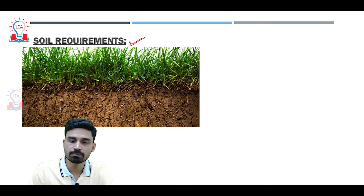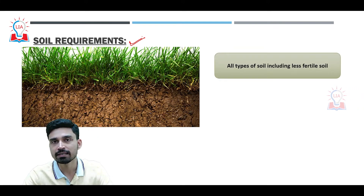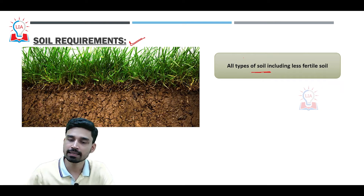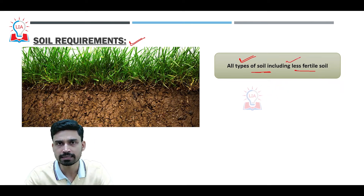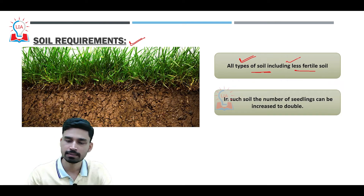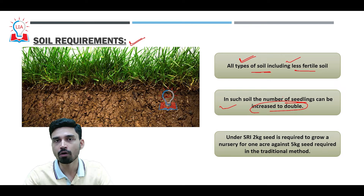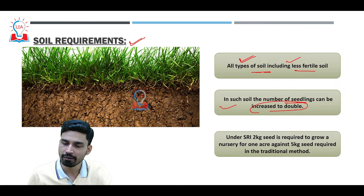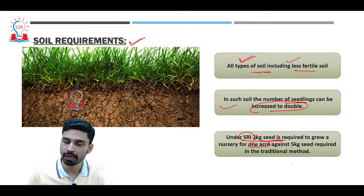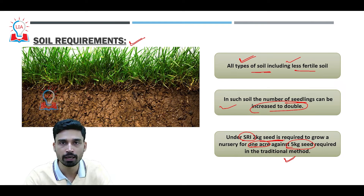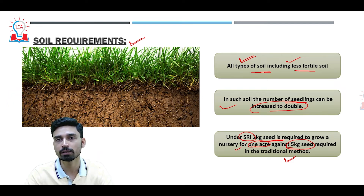The SRI system can be used in all types of soil, including less fertile soils, because water and chemical fertilizer requirements are much lower. In such soils, the number of seedlings can increase to double. Comparing seed use, the SRI system requires only two kilograms of seed to grow a nursery for one acre, while the conventional method requires almost five kilograms for the same area — significantly reducing input costs for small and marginal farmers.